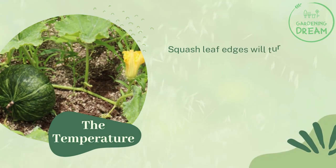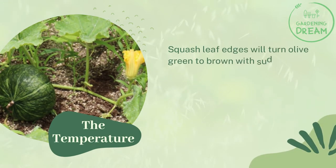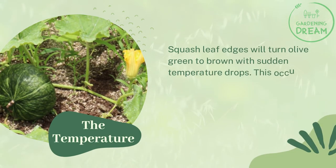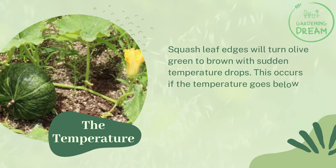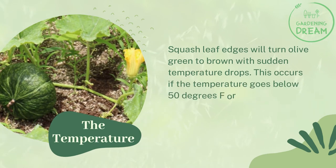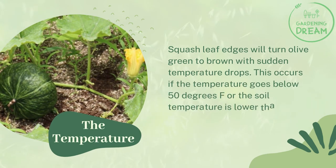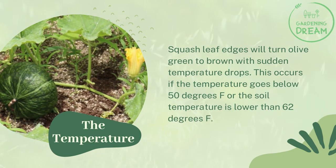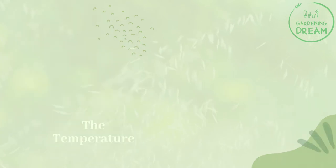Temperature: Squash leaf edges will turn olive green to brown with sudden temperature drops. This occurs if the temperature goes below 50 degrees Fahrenheit or the soil temperature is lower than 62 degrees Fahrenheit.